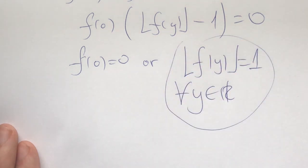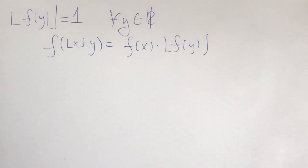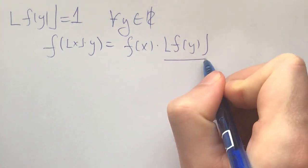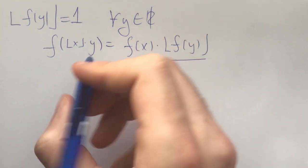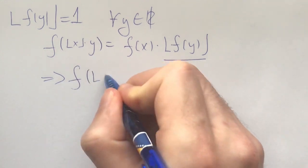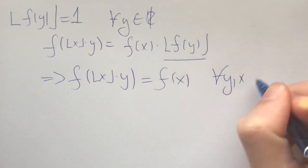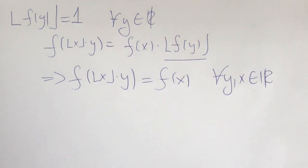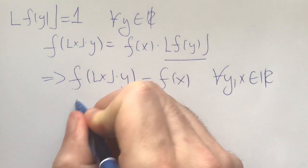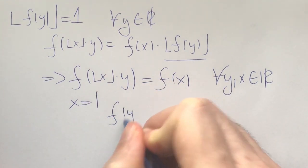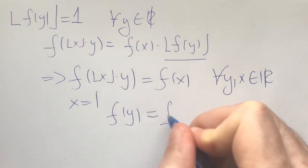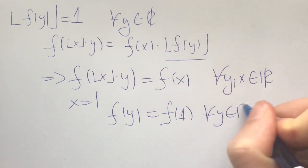Let's start with the case where floor of f of y equals one for all real y. Because the floor of f of y is one, the functional equation transforms into f of floor of x times y equals f of x for all real x and y. By plugging in x equals one, we get f of y equals f of one for all real y.